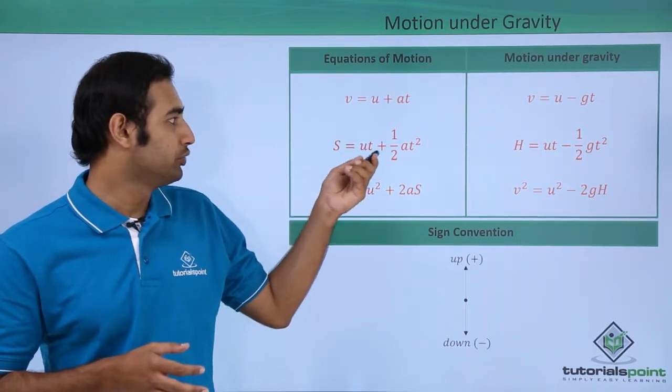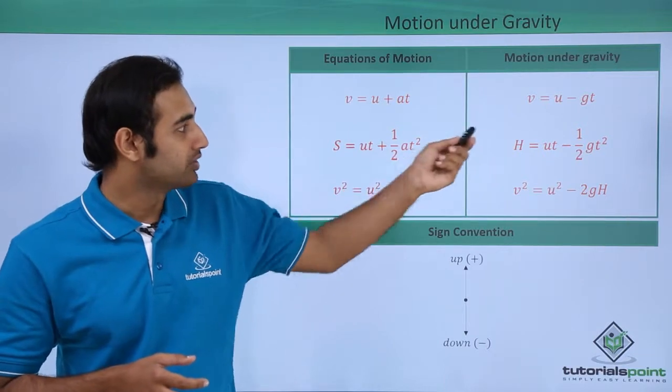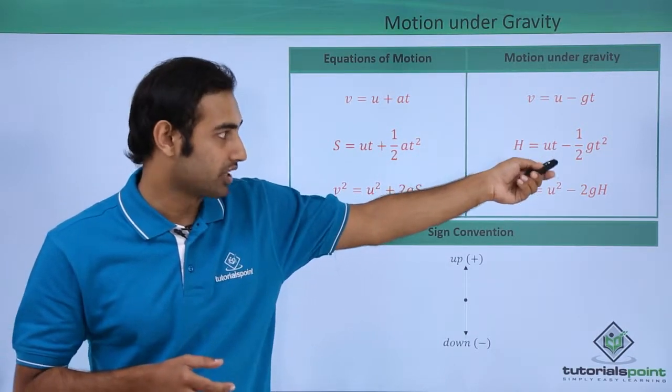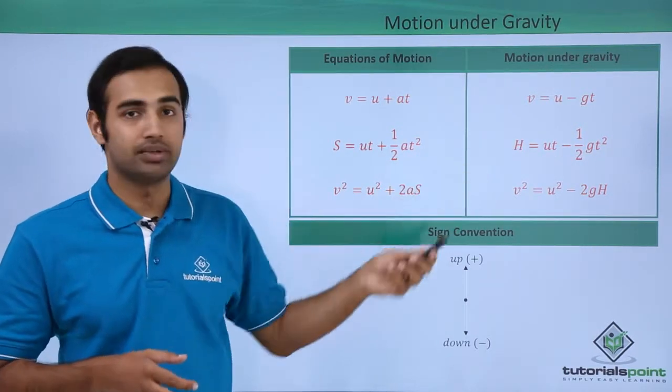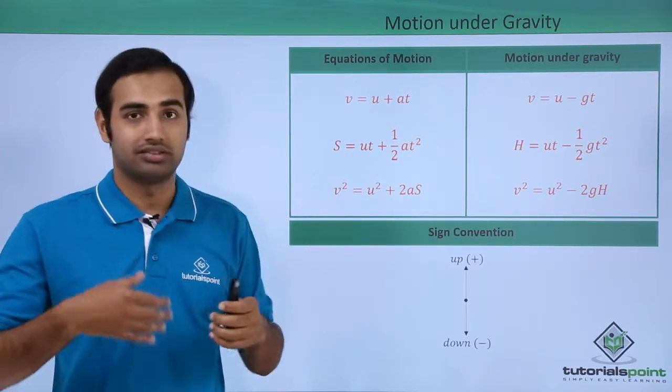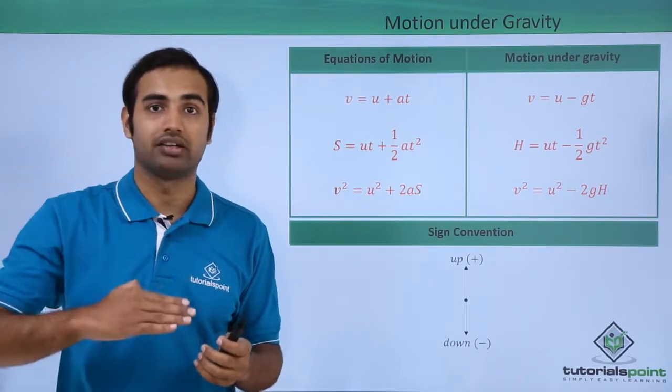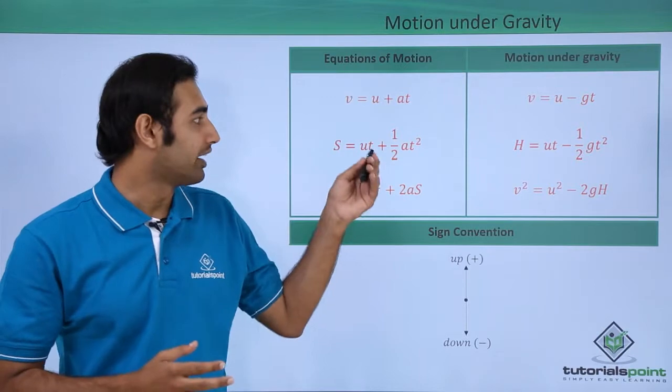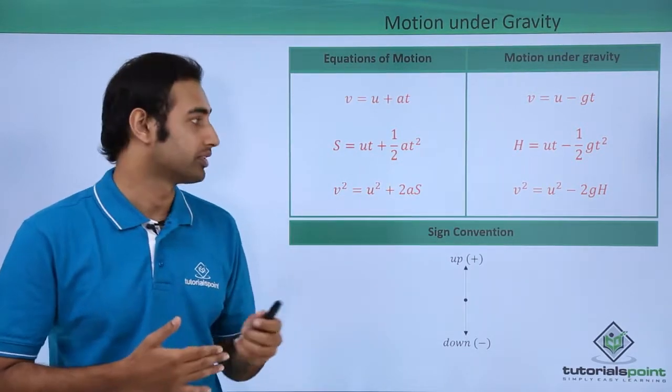The second equation is s is equal to ut plus half a t square, which becomes h is equal to ut minus half gt square. h is simply the height which replaces displacement because this time I am having height vertically, and acceleration becomes minus g just like the first equation.